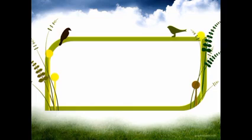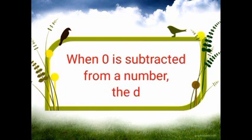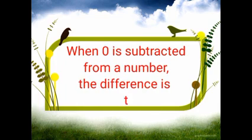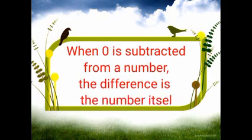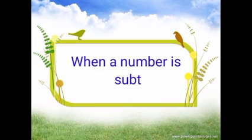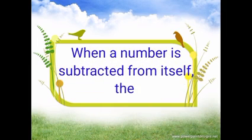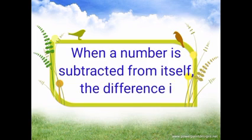Let us know: when zero is subtracted from a number, the difference is the number itself. And when a number is subtracted from itself, the difference is zero.